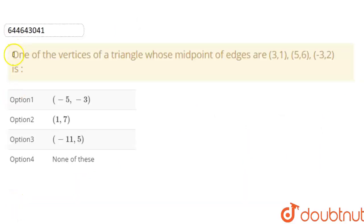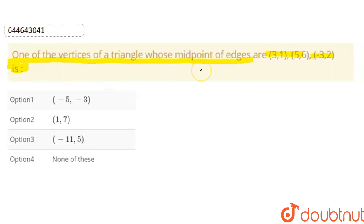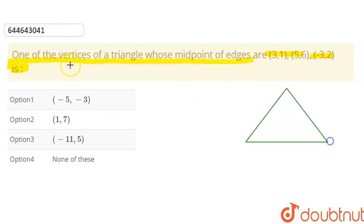Today our question is: one of the vertices of a triangle whose midpoints of edges are (3, 1), (5, 6) and (-3, 2) is. So we have to find out the vertices of a triangle whose midpoints are given to us. Let's say this is our triangle and the vertices are A, B, C.